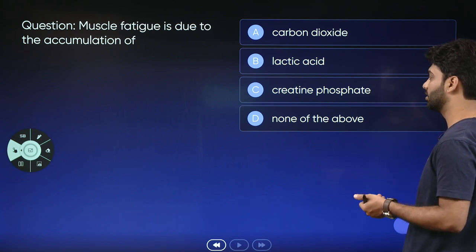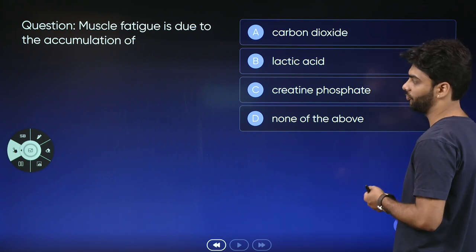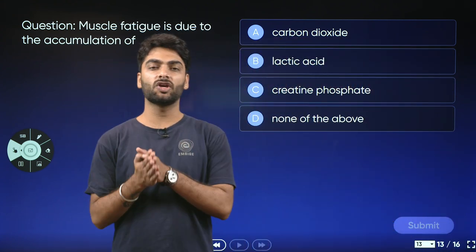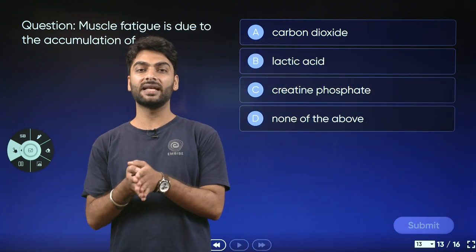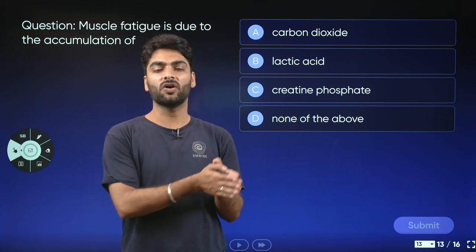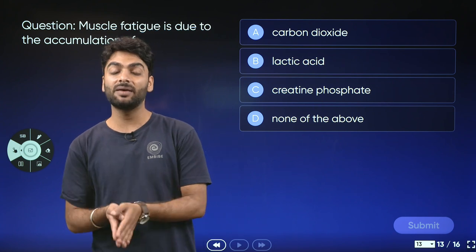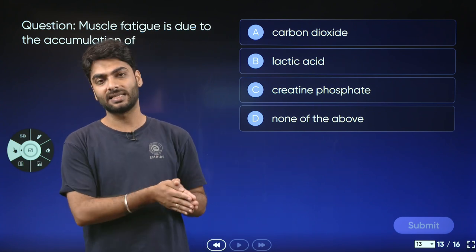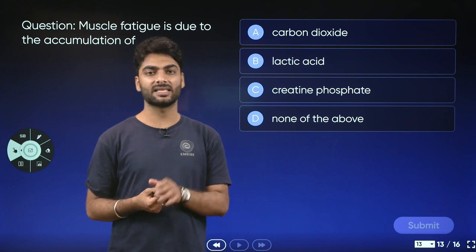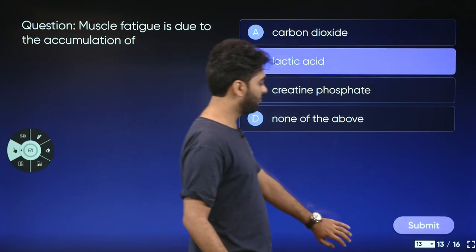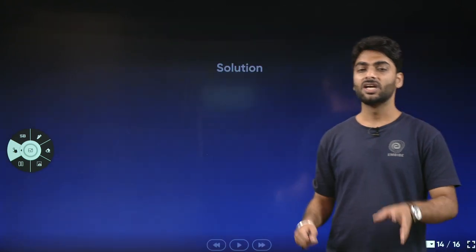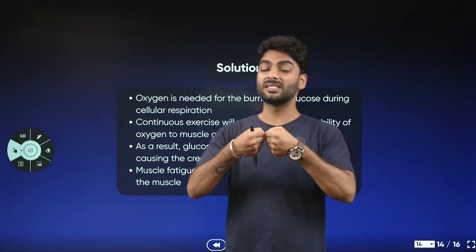The next question: muscle fatigue is due to accumulation of — carbon dioxide, lactic acid, creatine phosphate, or none of the above? As discussed, when muscles don't get enough oxygen to break down glucose, instead of producing carbon dioxide, water vapor, and energy, they produce lactic acid and energy. Excess accumulation of lactic acid in muscle cells causes muscle cramps. So lactic acid is the correct answer.